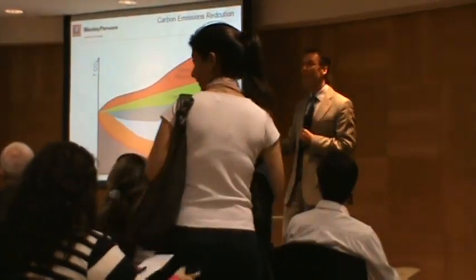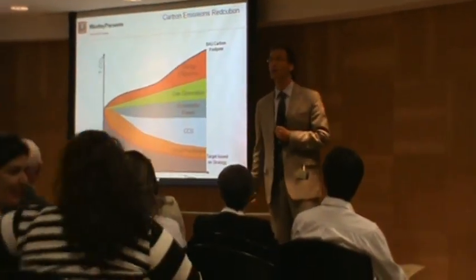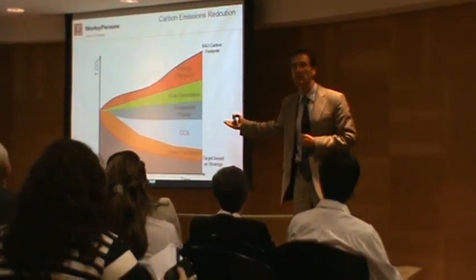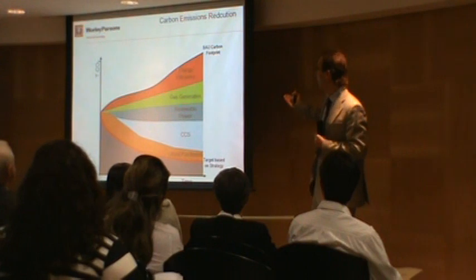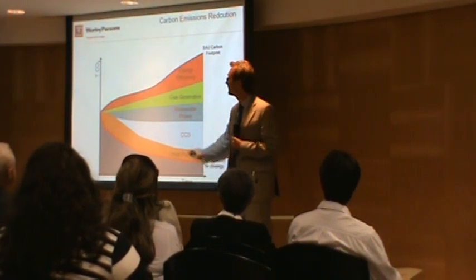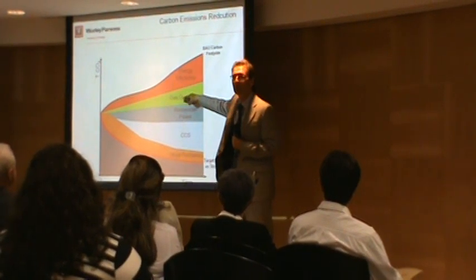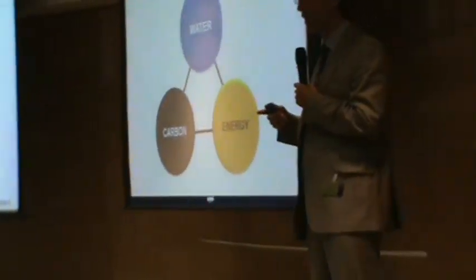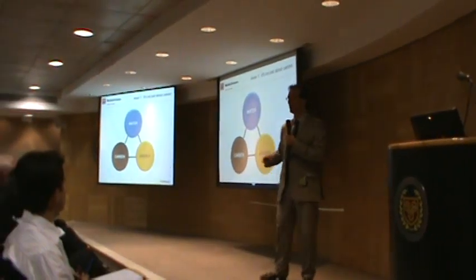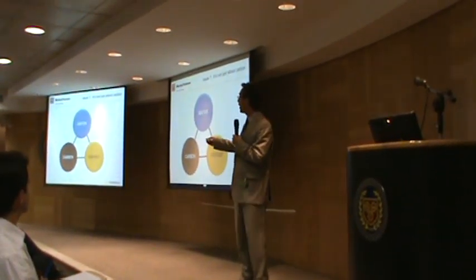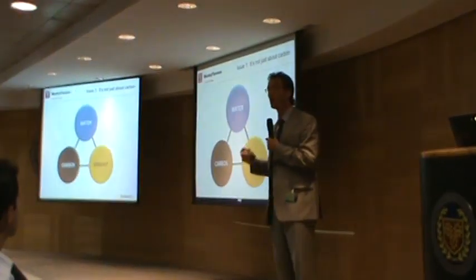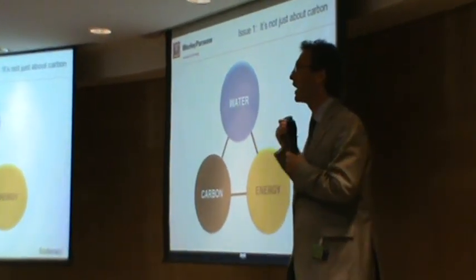The second question is: if that's my goal, how do I get there? Many of you are familiar with the Socolow wedge concept. Socolow from MIT developed this some years ago — the idea that to reach a carbon reduction objective, it's not only about carbon. Carbon is intimately connected to so many other things that we do in our businesses. I call this the sustainability triad: carbon, energy, and water are inextricably linked.